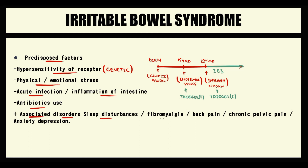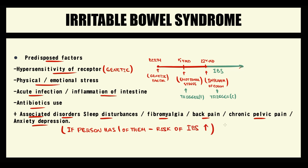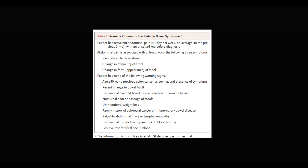Irritable bowel syndrome has a strong association with sleep disturbances, fibromyalgia, back pain, chronic pelvic pain, anxiety, and depression. This can help in diagnosis, because if a person has one of these disorders, the probability of IBS greatly increases.